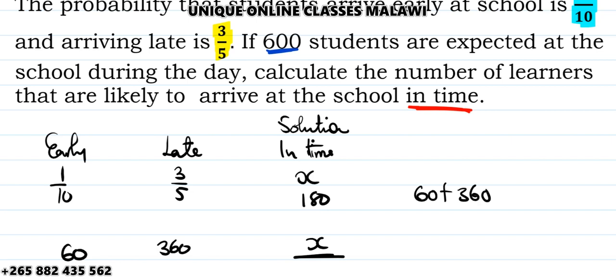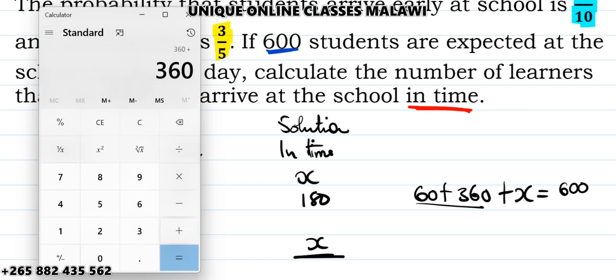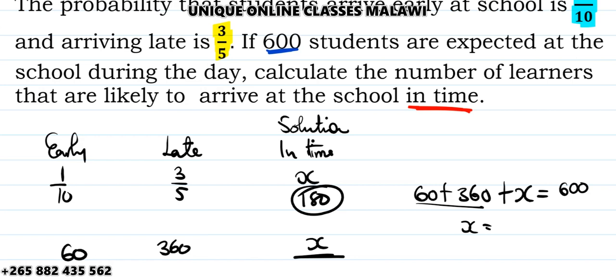Let's verify: 60 plus 360 plus 180 equals 600. Or you can do 320 plus 60, which is 380, no wait—60 plus 360 is 420, then 600 minus 420 gives you 180. So x is 180. That's how you solve this problem.